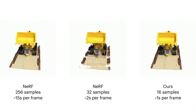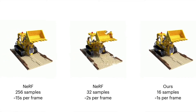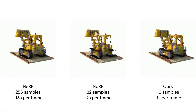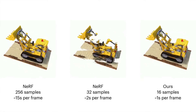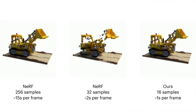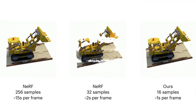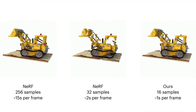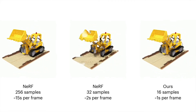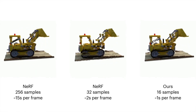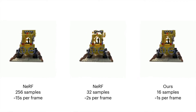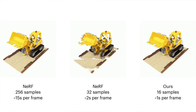Here you can see some results. On the left, you can see the original NeRF implementation, which needs roughly 256 samples per ray to render one image, and therefore takes roughly 15 seconds to generate a single frame. On the right, you can see our implementation with the depth network, which needs only 16 samples per ray, and therefore we managed to render it in around one second. In the middle, you can see the necessity of the number of samples NeRF needs — if we try to decrease the samples to roughly 32, which takes two seconds to render, the quality of the image drops very, very quickly.